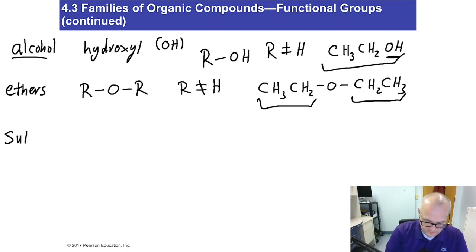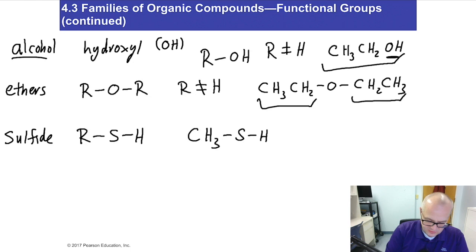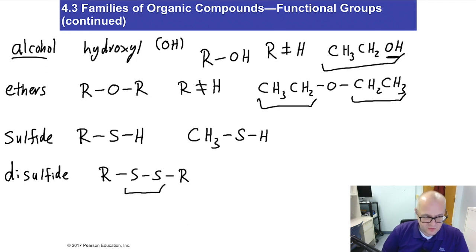Sulfide is very similar to alcohol, but instead of an OH, you have an SH. An example of a sulfide would have the structure R-SH. There's also disulfide, which has the structure R-S-S-R, where two sulfurs make a bond. Disulfides are very common in things like proteins. So keep that in mind — alcohol, ether, sulfides, disulfides.